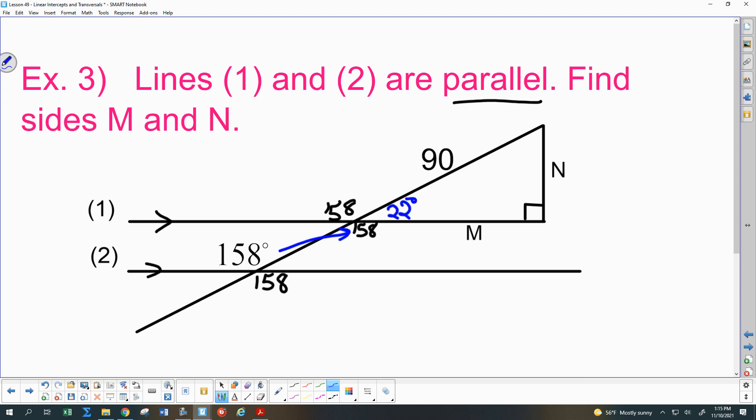Now we look just at the triangle, and we have two parts of this problem. Let's do M first. For 22 degrees, 90 is adjacent, hypotenuse, or opposite? 90 is the hypotenuse. And what's M? Adjacent. So A and H. SOHCAHTOA. Which trig ratio? Cosine, so we write down cosine, 22 degrees, is M over 90, adjacent over hypotenuse.